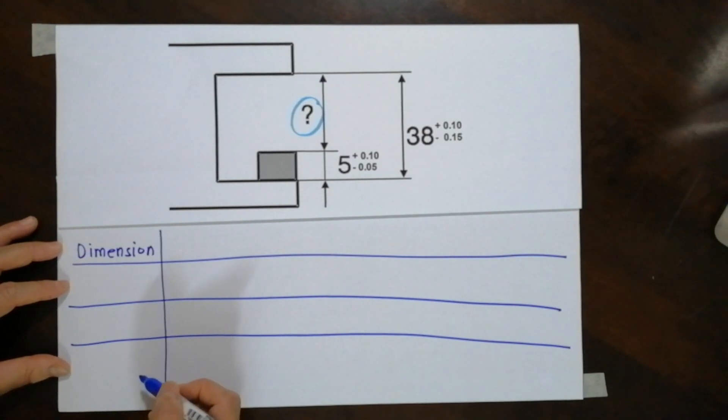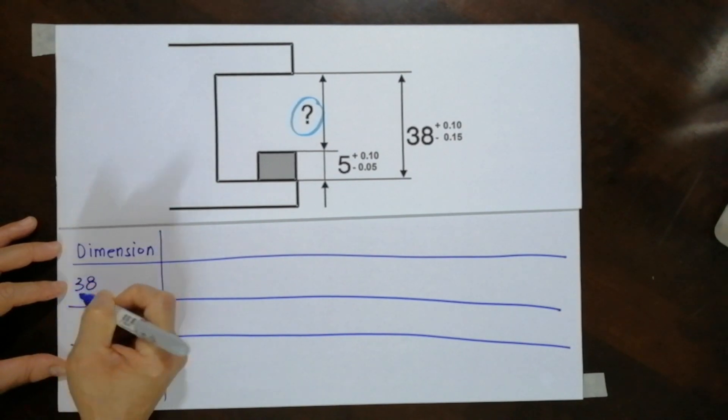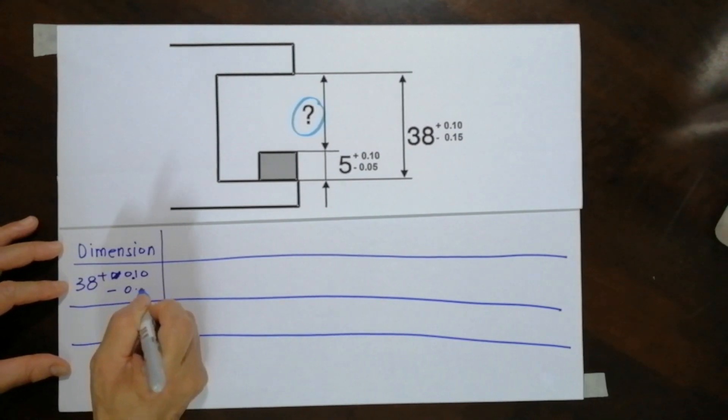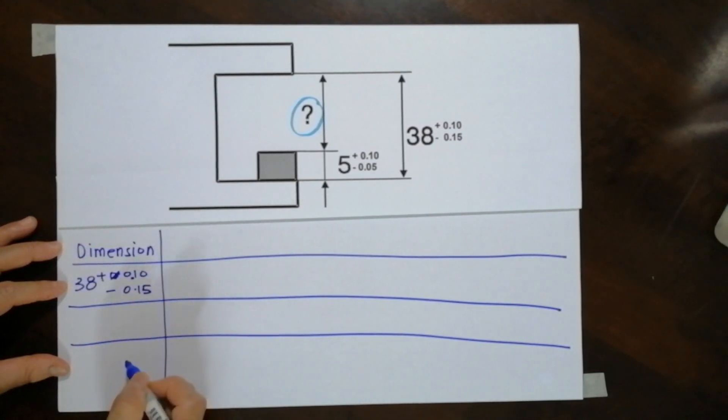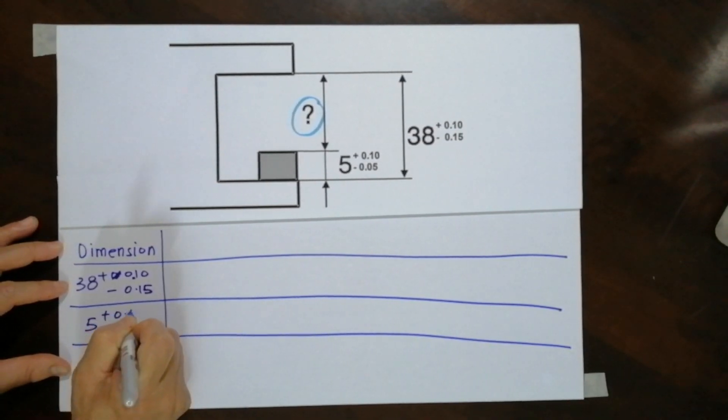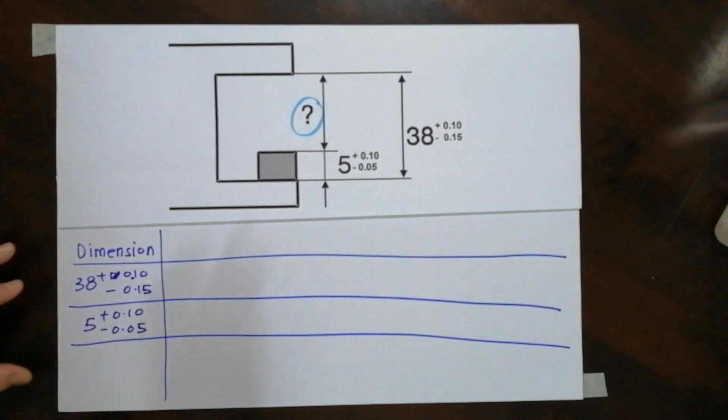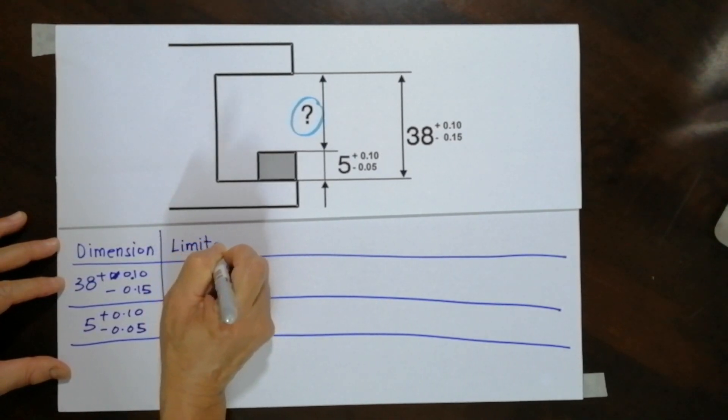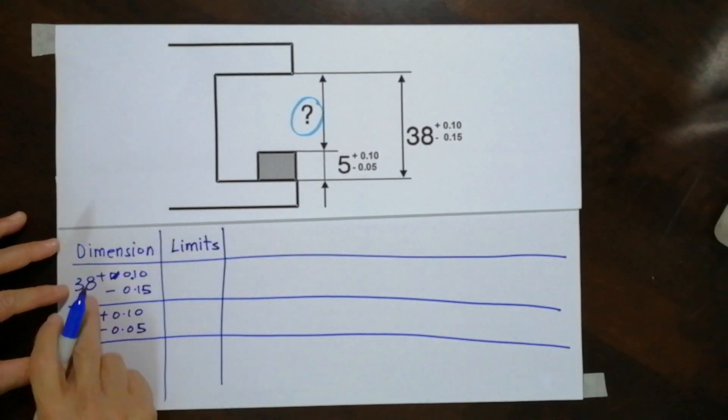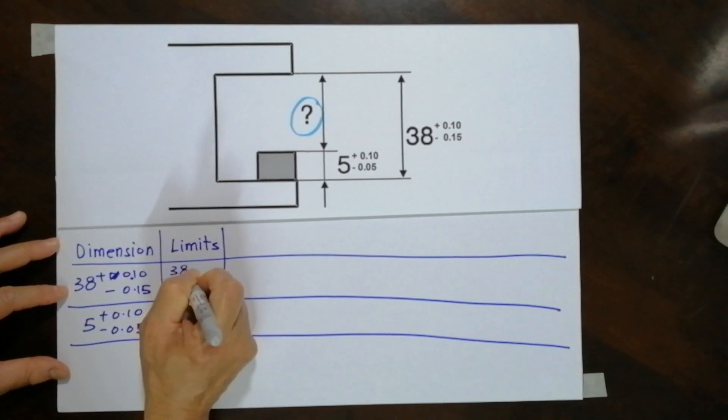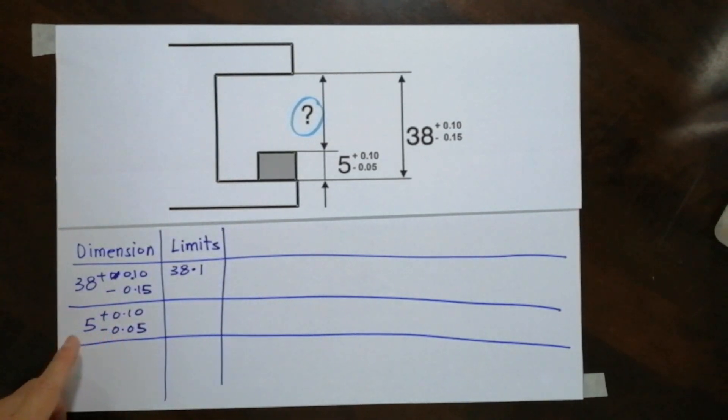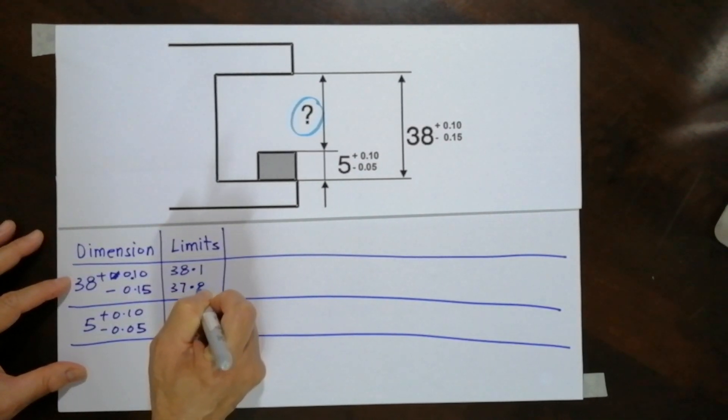So this dimension I have is 38 plus 0.10 minus 0.15. The other one is 5 plus 0.10 minus 0.05. So the next level is the limit. The upper limit of this will be 38.1 and the lower limit will be 37.85. Similarly, I will have 5.1 here and 4.95.